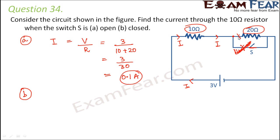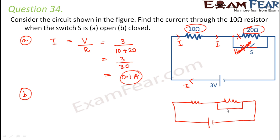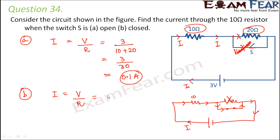As a result, there will be no current flowing through the 20 ohm resistor, so the 20 ohm resistor has no role to play. The amount of current passing through the 10 ohm resistor is now V by R, where V remains 3 volts but R is only 10 ohms, giving 0.3 amperes. So more current flows through the 10 ohm resistor when the switch is closed.